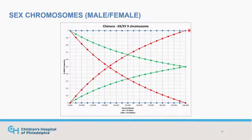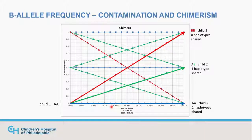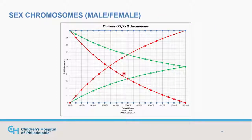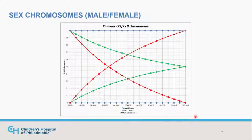One important point: this is symmetric. If you have 20% mosaicism, you can't really tell who is the major and the minor contributor, and there are some percents like 50% where it's actually uninformative — everything lines up. However, if you have an XX/XY chimera, there's actual asymmetry where one side is male and the other is female, so looking at the sex chromosomes can immediately show who is the major and minor contributor.